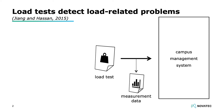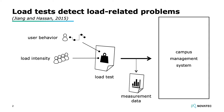The campus management system is a session-based system; that is, each user has a session when interacting with the system. Therefore, the load test needs to model three major aspects: the behavior of a single user — namely the order and timing of requests they submit; the load intensity, that is, the number of users that interact with the system during the test; and parameterization, which includes, for instance, request parameters.